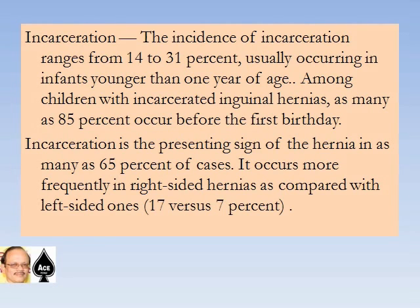The incidence of incarceration ranges from 14 to 31 percent, usually occurring in infants younger than one year of age. Among children with incarcerated inguinal hernia, as many as 85 percent occur before the first birthday. Incarceration is the presenting sign of the hernia in as many as 65 percent of cases. It occurs more frequently in right-sided hernias compared with left-sided ones — 17 versus 7 percent.